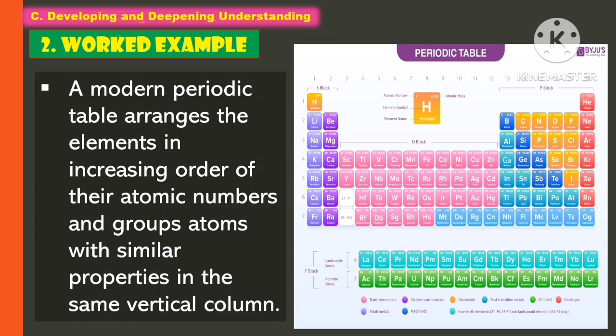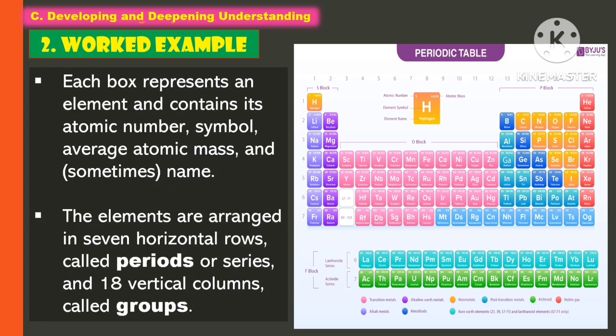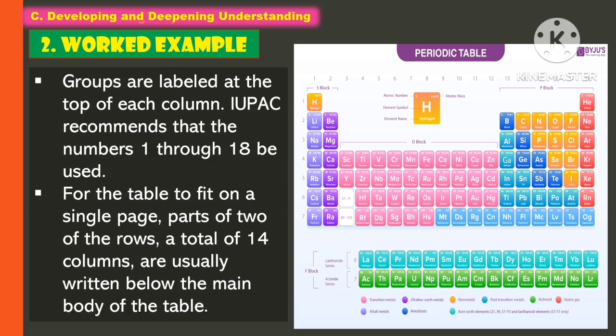A modern periodic table arranges the elements in increasing order of their atomic numbers and groups atoms with similar properties in the same vertical column. Each box represents an element and contains its atomic number, symbol, average atomic mass, and name. These elements are arranged in seven horizontal rows called the periods or series, and 18 vertical columns called the groups. Groups are labeled at the top of each column. IUPAC recommends that numbers 1 through 18 be used so the table fits on a single page. Parts of two of the rows, a total of 14 columns, are usually written below the main body of the table.